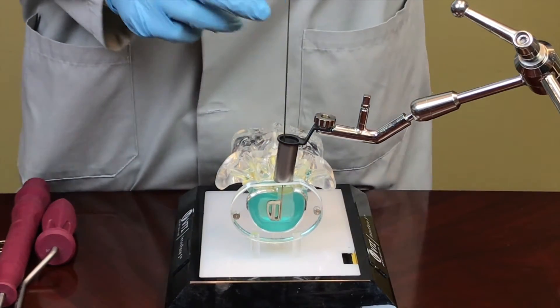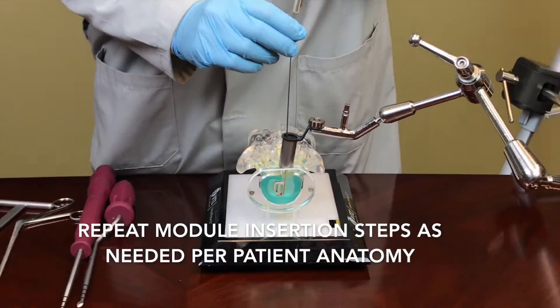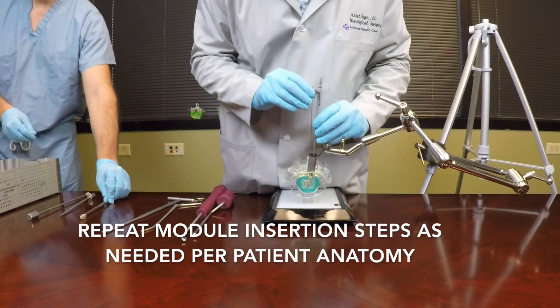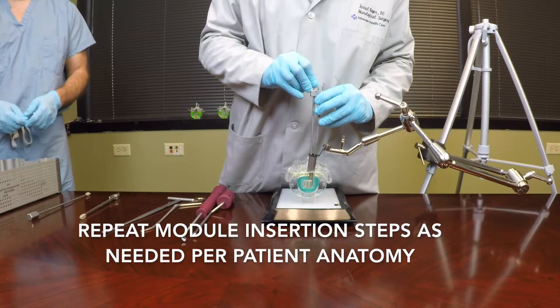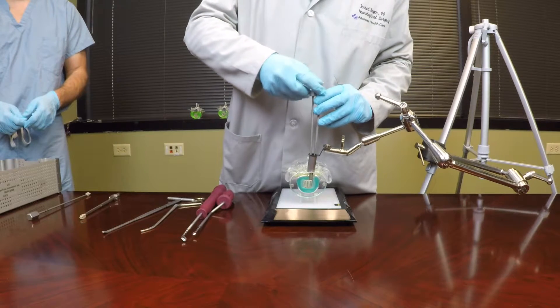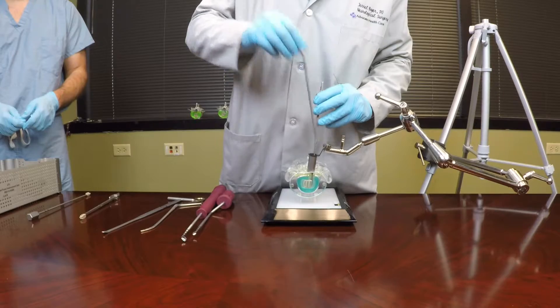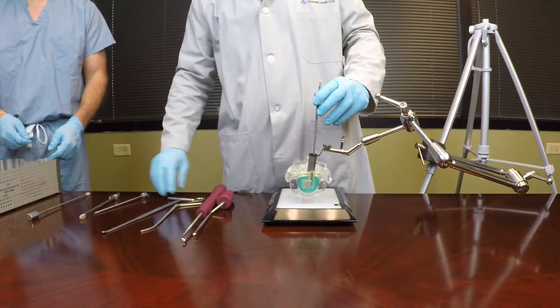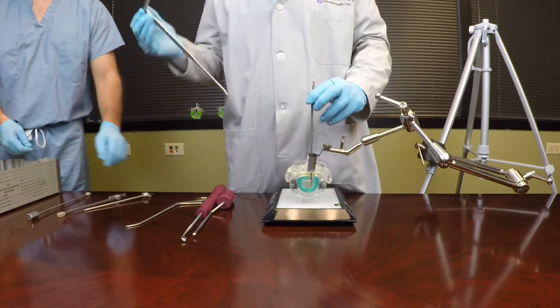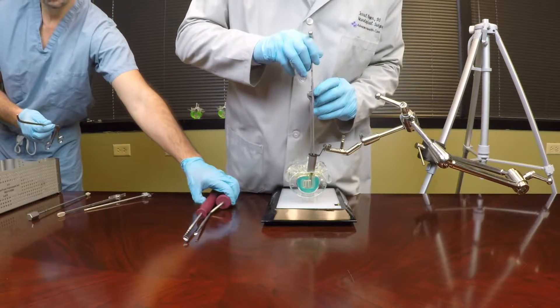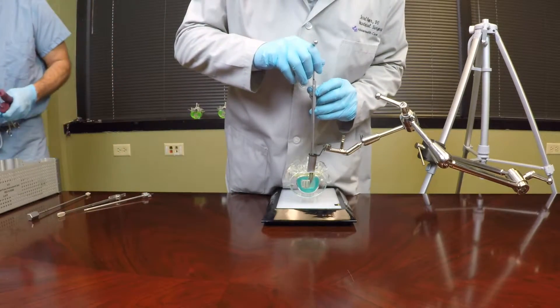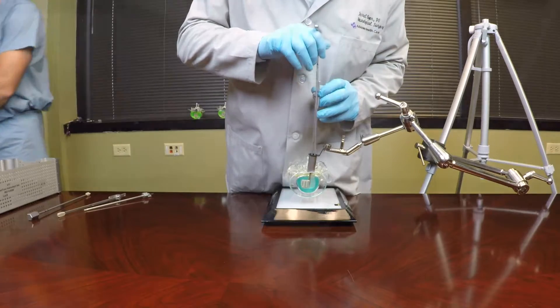We'll then take a third implant. Again, we'll cut the tail off the second module simply by rotating the cutter. Again, we'll take the positioning guide down through the tube and can translate the modules.